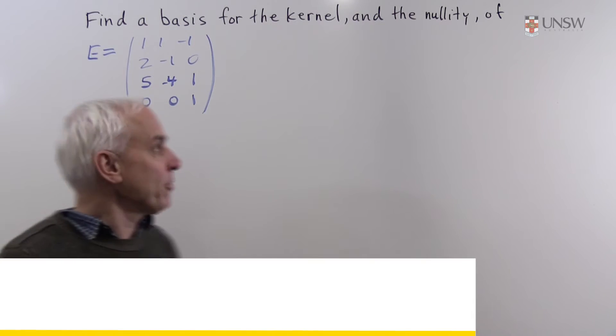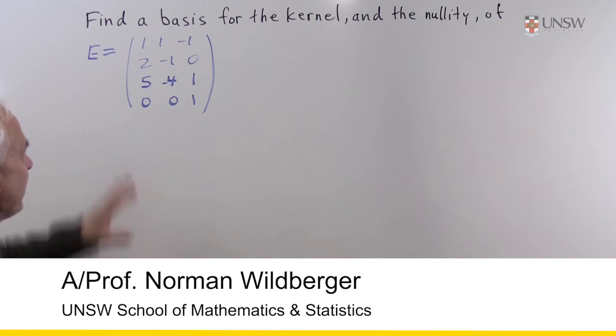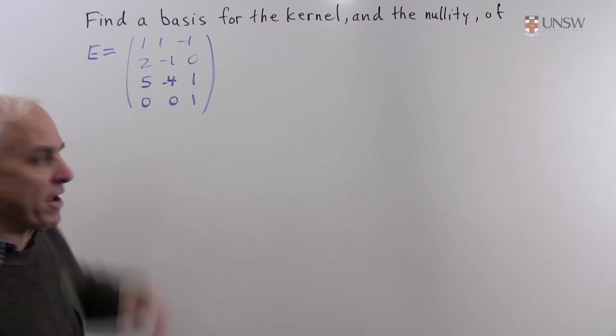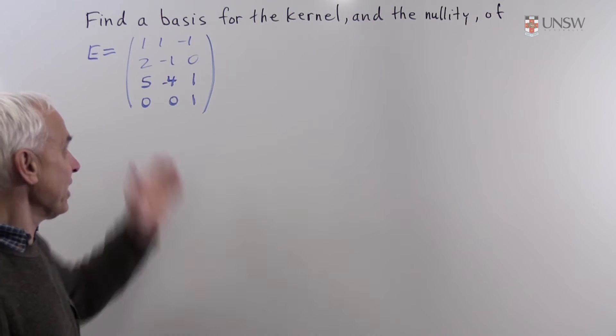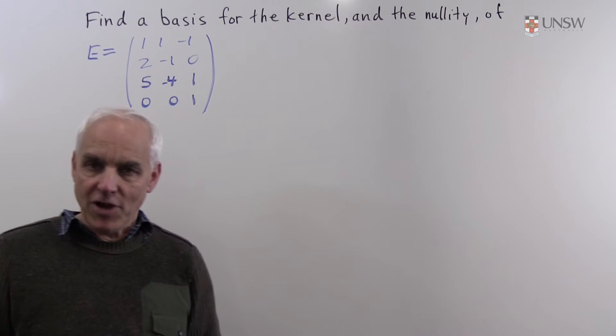Let's also have a look at this example, which is very similar, but it's a different kind of size. So here we have a 4 by 3 matrix E. We're still asked to find a basis for the kernel and its nullity.